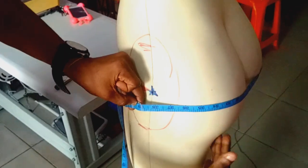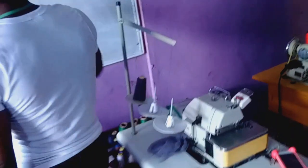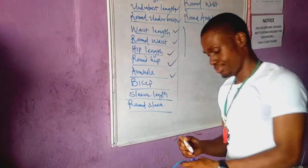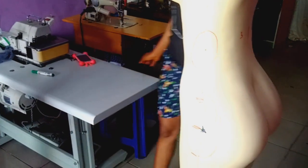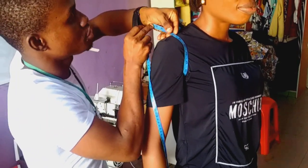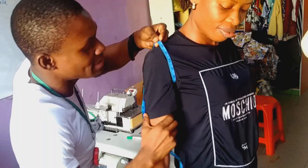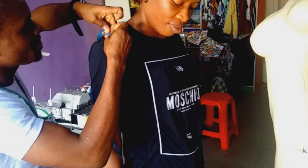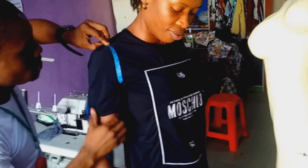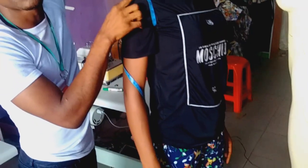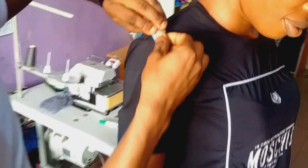We are done with hip length and round hip. Let's move to the armhole. To measure the armhole, just put your tape round the armhole. Ask the person to release their hand — don't let them hold the tape. Don't make it too tight; you want it a bit loose. The round armhole is 16 inches.